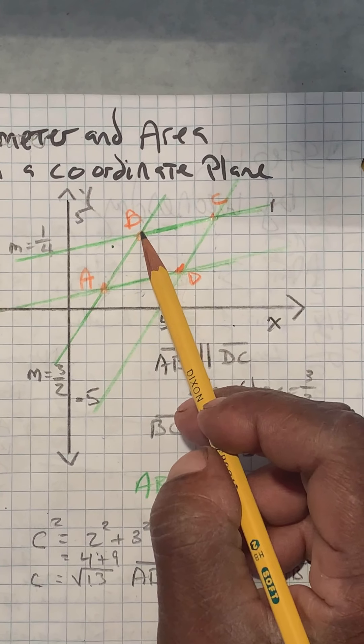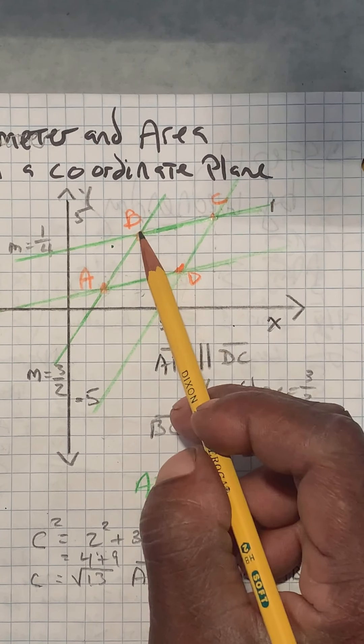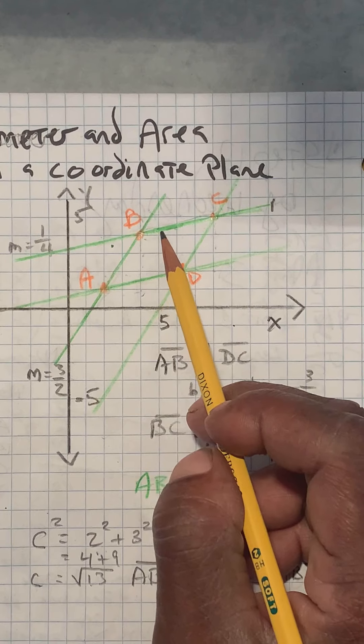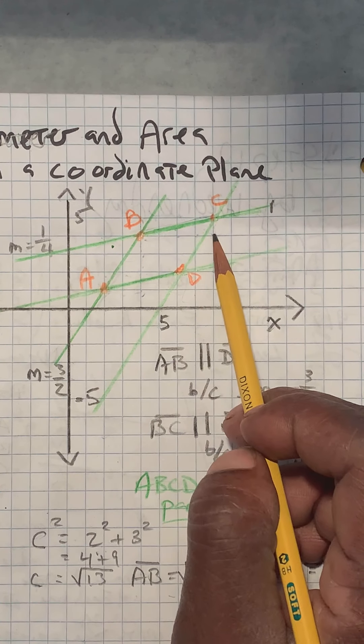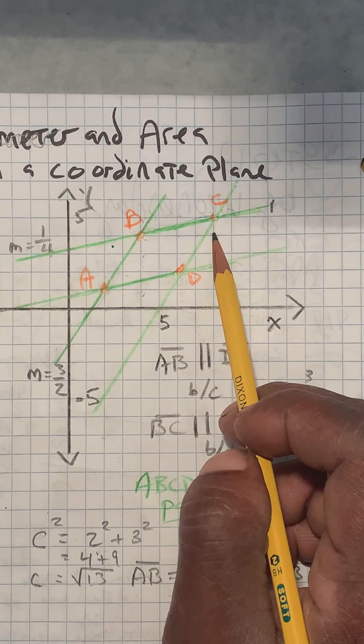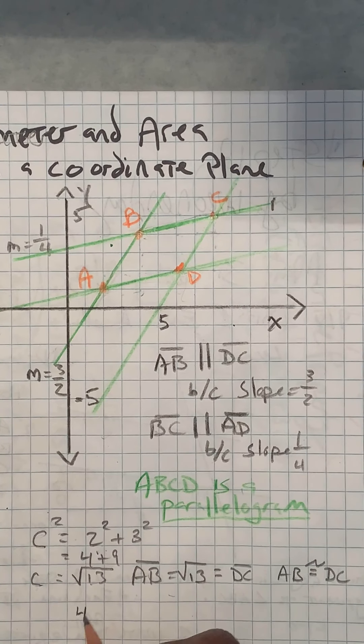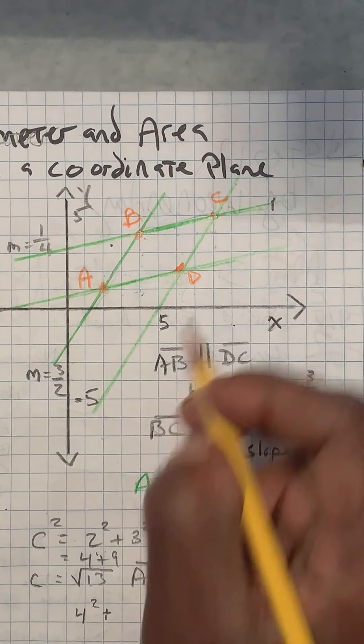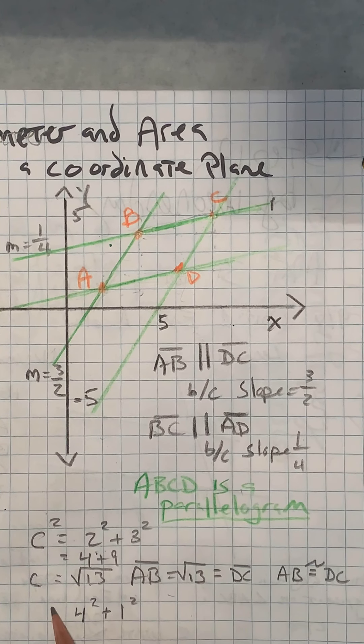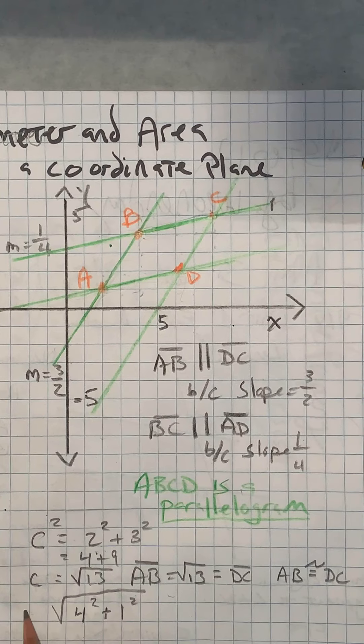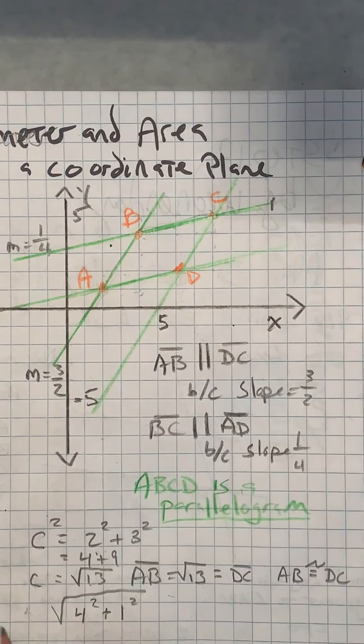Use the same reasoning to figure out this BC length. Change in the x direction: 1, 2, 3, 4. So it's a change of 4 in the x direction. So that's going to be 4 squared. And then it's a change of 1 in the y direction, so plus 1 squared. And we're going to square root that whole answer. And that'll tell us how long BC is.